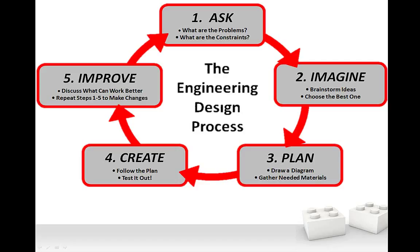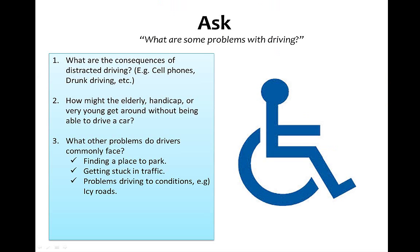Let's try to relate these distinct stages to a real-world problem: driving a car. Just off the top of your head, what are some problems associated with driving a motorized vehicle? All sorts of bad things can happen when driving distracted — using a cell phone or driving drunk can cause accidents. Not everybody can drive, so how do the elderly, handicapped, or very young get around? Other common problems include finding parking, getting stuck in traffic, and driving in adverse weather conditions.